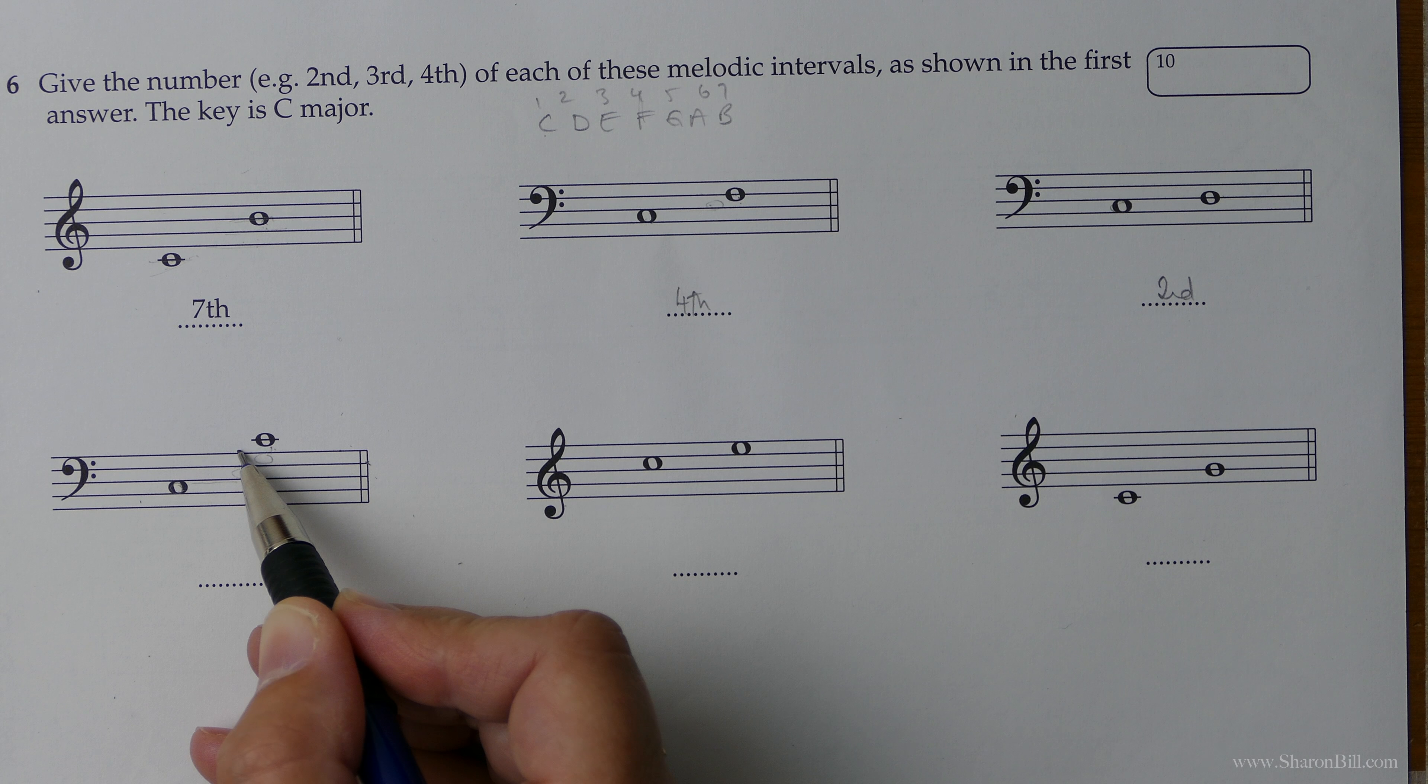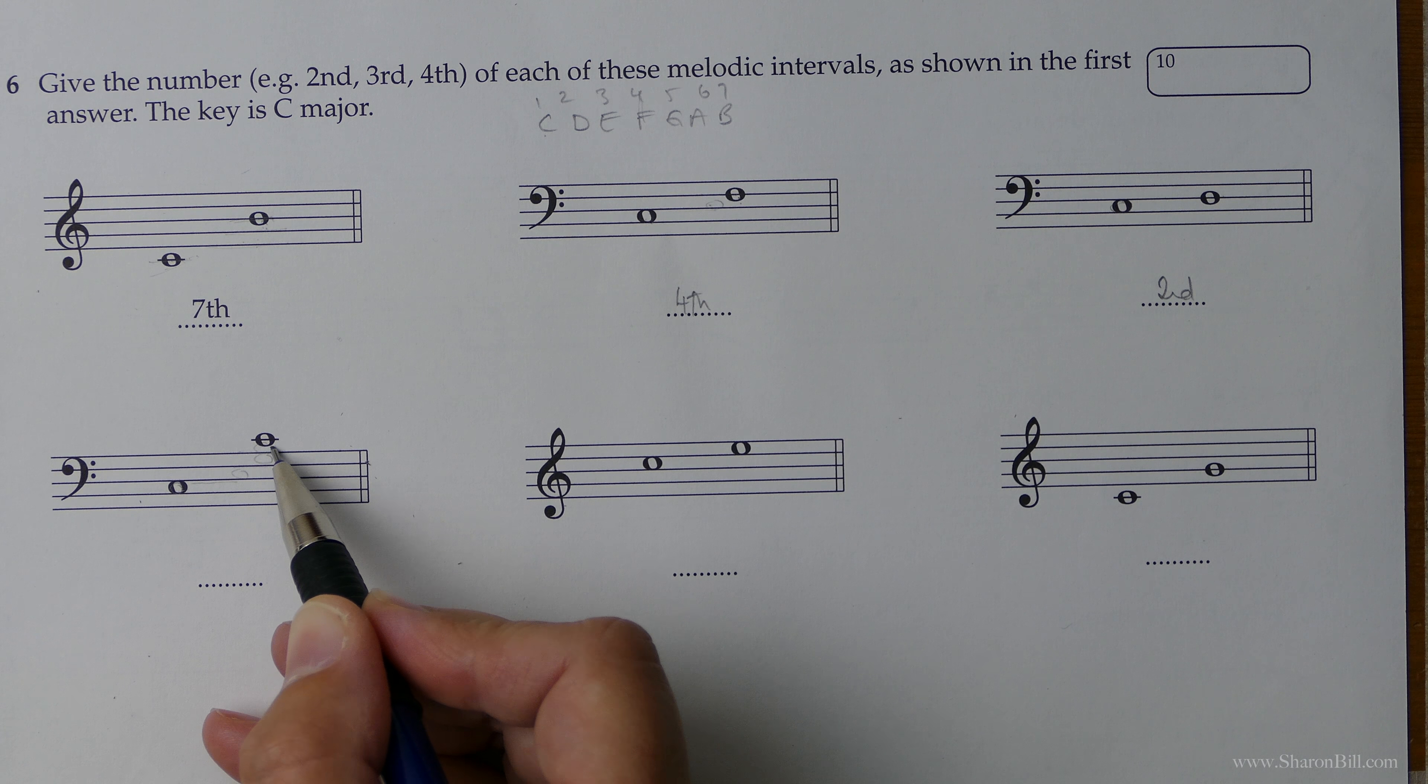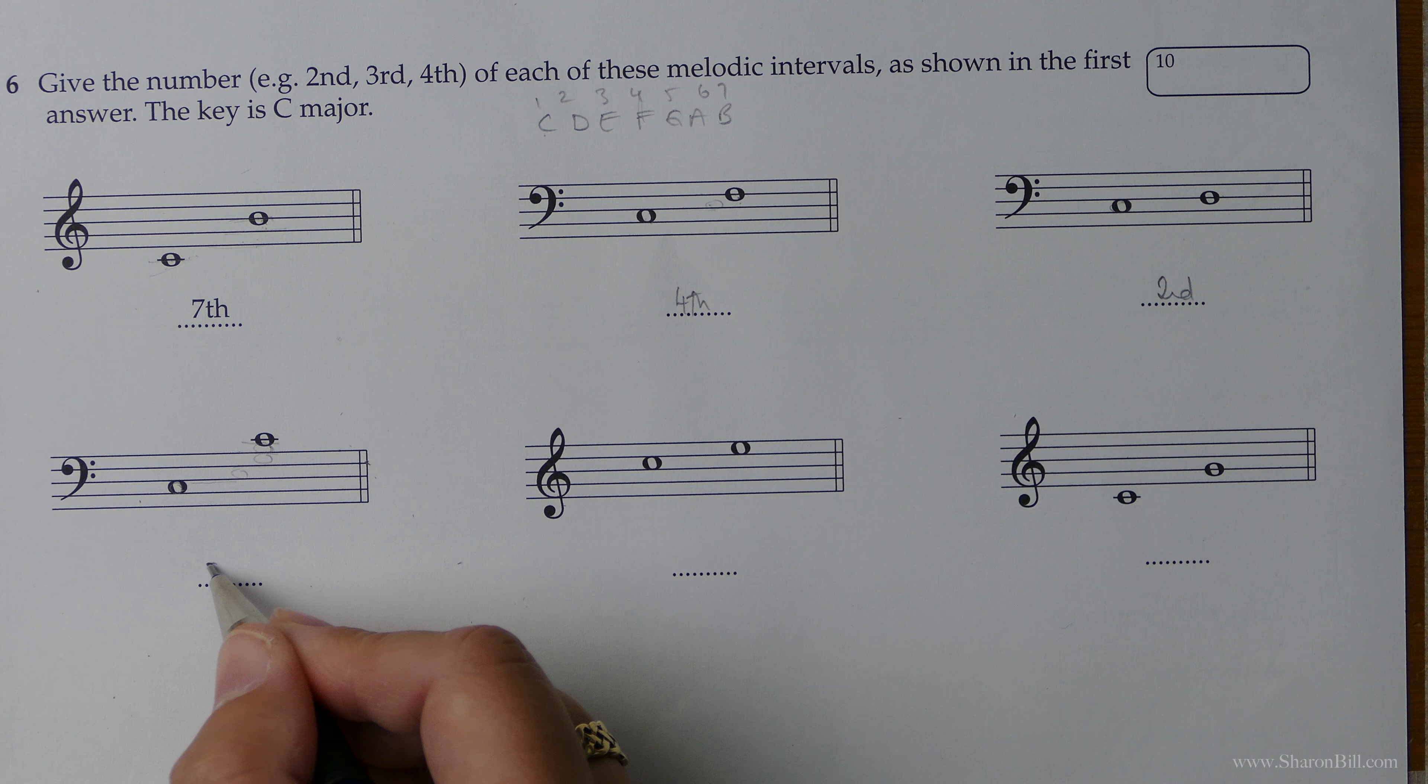Let's look here. Now here we're going from C to C which we know is an octave or an eighth. But let's just double check that. One, two, three, four, five, six, seven is the space, eighth is the line. So there we can see we've got an octave or an eighth either way. You could say either of those. That's okay.